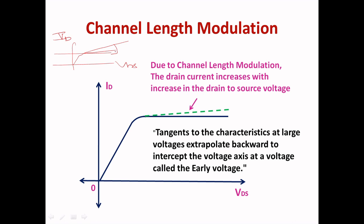Our concept is to reduce this change by modifying the circuit. I want to reduce the changes of I_D with respect to VDS so that the stability of the circuit can be increased. Reducing the changes of I_D with respect to VDS directly implies that the stability is increasing, which means the output resistance is increasing.